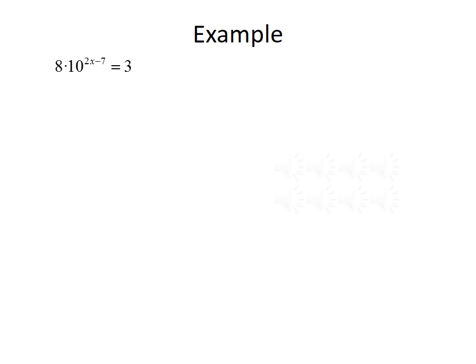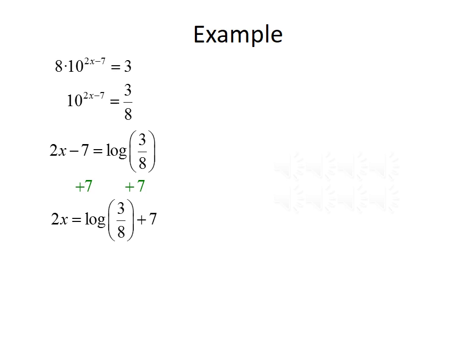One final example: 8 times 10 to the 2x minus 7 equals 3. First, isolate the exponential by dividing both sides by 8, giving 10 to the 2x minus 7 equals 3 over 8. Using the definition of the logarithm, we rewrite as 2x minus 7 equals log of 3 eighths. Adding 7 to both sides gives 2x equals log of 3 eighths plus 7. Dividing by 2 gives x equals the log of 3 eighths plus 7, divided by 2, which evaluates to approximately 3.287.